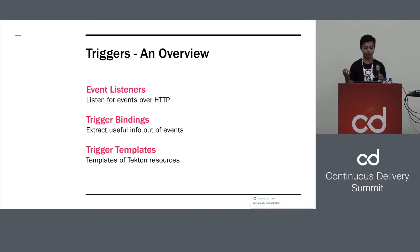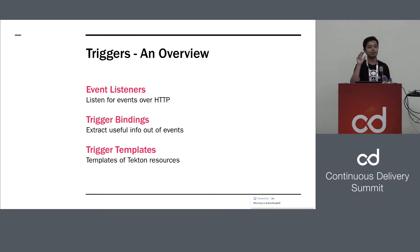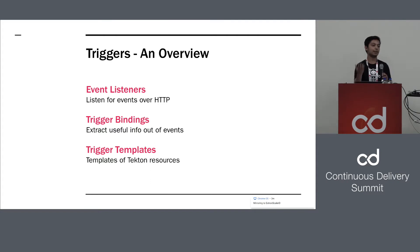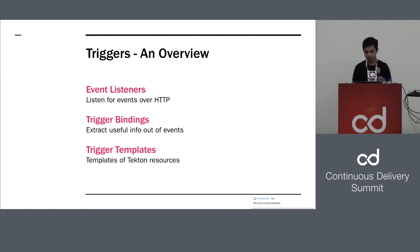Things like cloud events are automatically compatible. Next up, we have bindings — you have events coming in, and we provide a way to extract useful stuff out of them. Things like, I want only the commit hash out of this payload. And then once you have this useful information extracted, you want to do something useful with it. To do that, we provide templates — basically tasks and pipelines represented in a templated form, where you say this is a template with these parameters, and I can inject these values into it to form a fully formed Tekton resource.